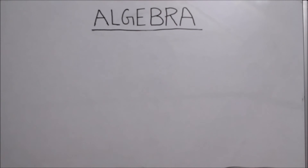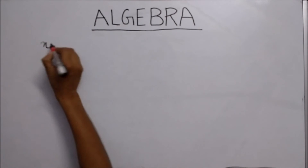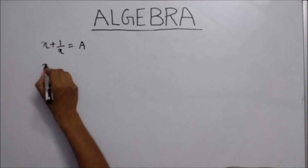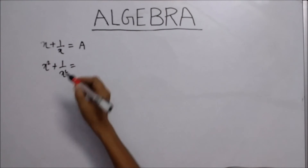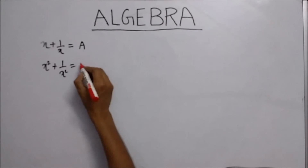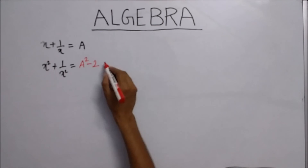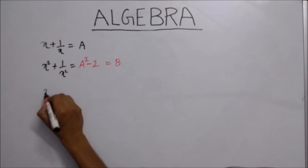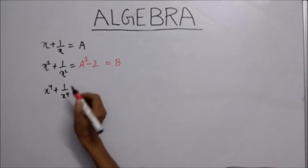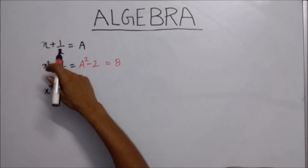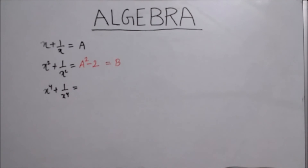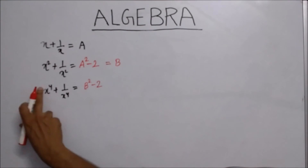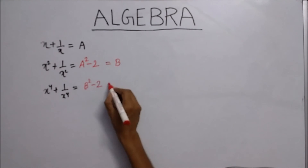Now we will discuss the third formula of algebra. Whenever you find x plus 1 upon x equals a and you have to find x squared plus 1 upon x squared, you already know that value is a squared minus 2. Write this value as p. When you have to find x to the power 4 plus 1 upon x to the power 4, just write p squared minus 2. That will be the value of x to the power 4 plus 1 upon x to the power 4. Write this value as c.